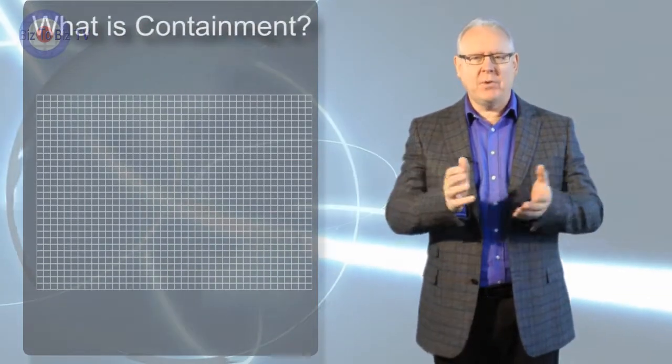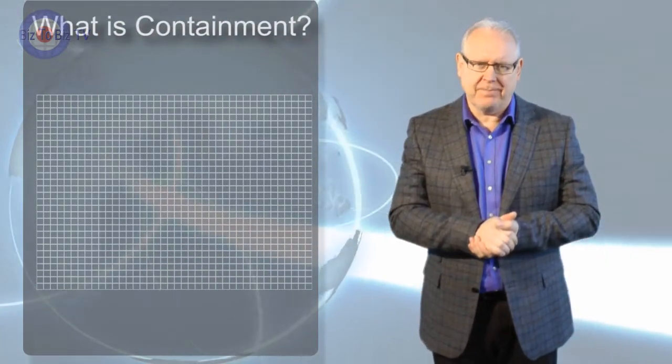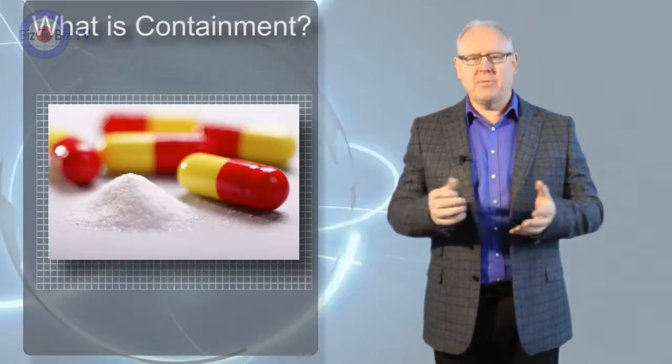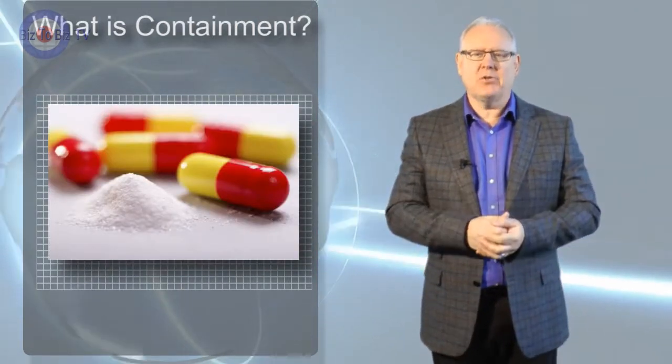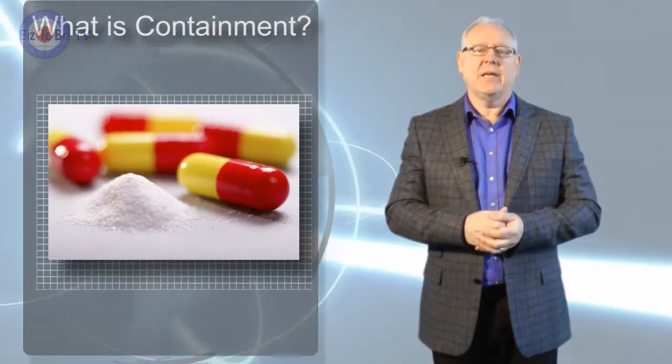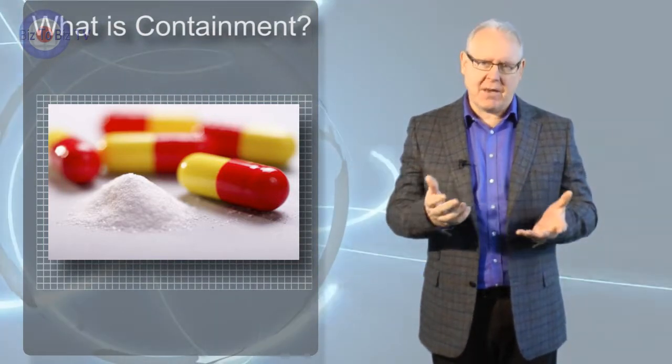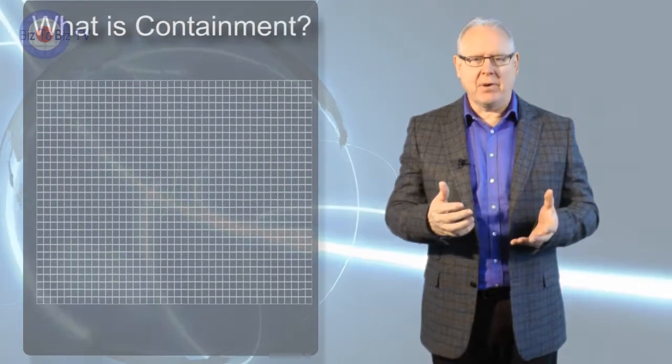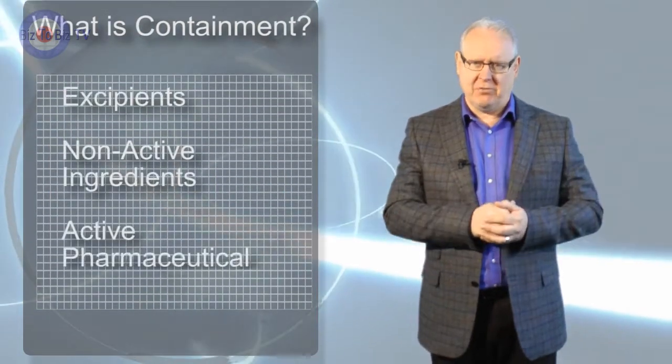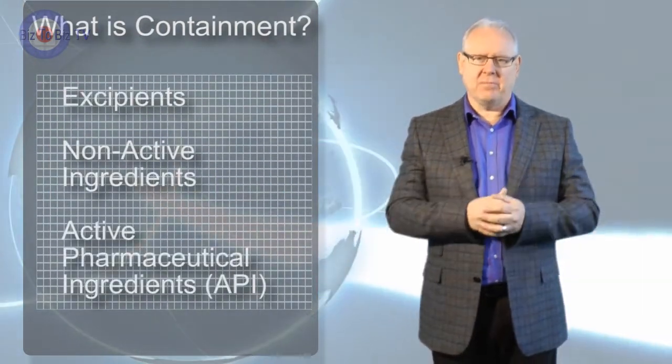What is containment and why do we need it in pharmaceutical production? Well it all comes back to understanding how pharmaceutical products are manufactured. In previous shows we explained that finished pharmaceutical products, tablets etc., are made up of excipient, the non-active ingredient, and the active pharmaceutical ingredients.